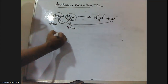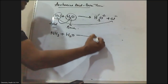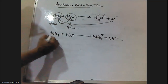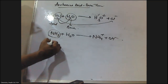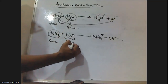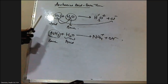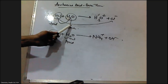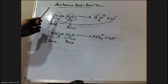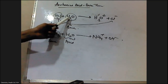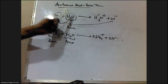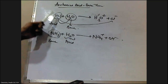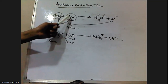Let me take one more example: NH3 + H2O. Here, the ammonia molecule accepts a proton from water and behaves like a base. As water donates a proton to ammonia, water is called the acid. So in HCl + H2O, water acts as a base and HCl acts as an acid because it donates a proton. In NH3 + H2O, ammonia accepts a proton and acts as a base, while water donates a proton and acts as an acid.